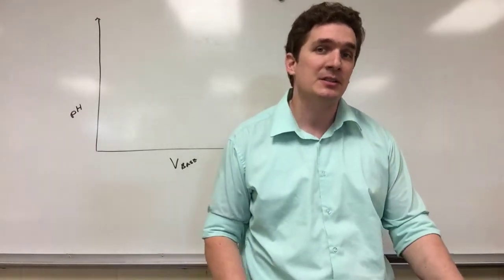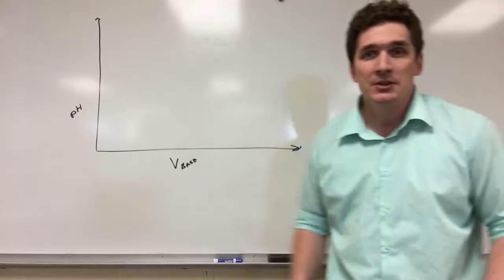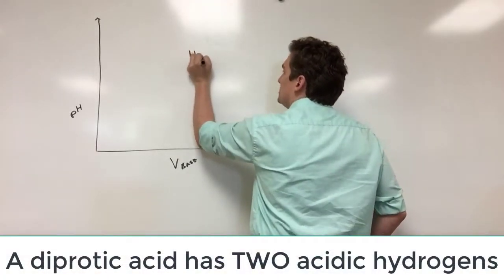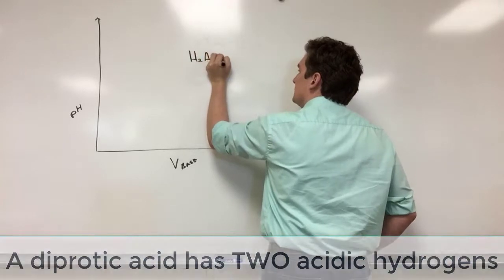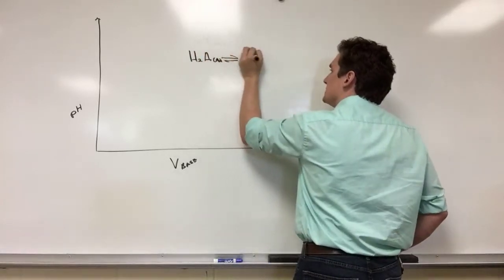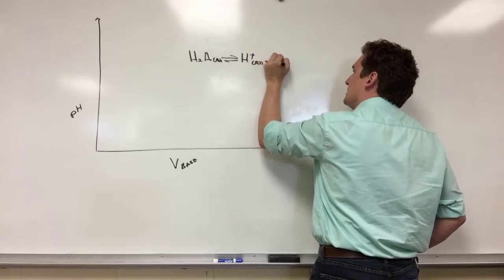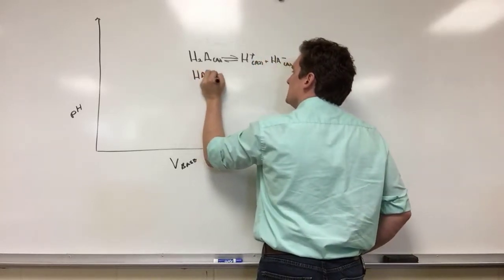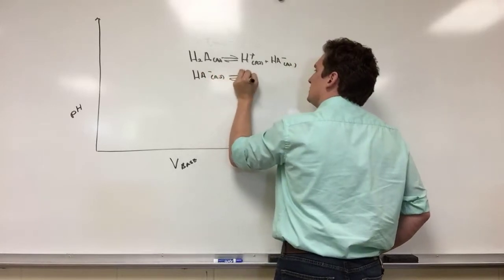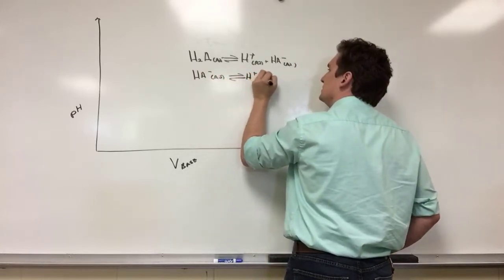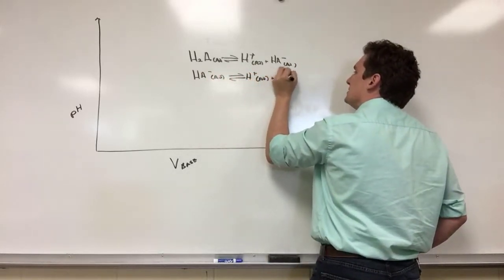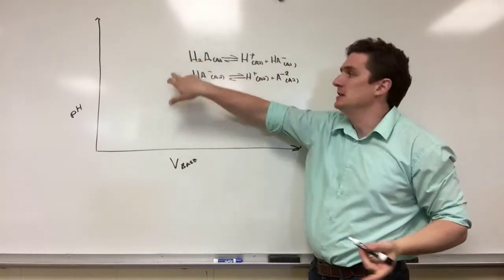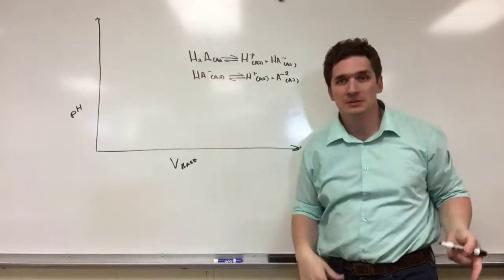As you may guess, the 'di' or 'tri' prefix tells you how many acidic hydrogens there are. For a diprotic acid we have two acidic hydrogens, and we write it as: H2A goes back and forth to H⁺(aq) plus HA⁻(aq), and HA⁻(aq) goes back and forth to H⁺(aq) plus A²⁻(aq). This would be the first deprotonation with its own equilibrium constant, and the second deprotonation with its own equilibrium constant.